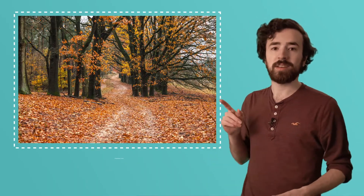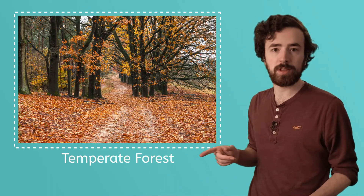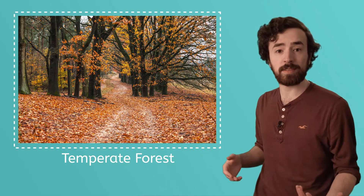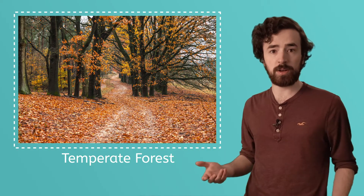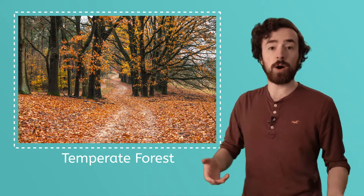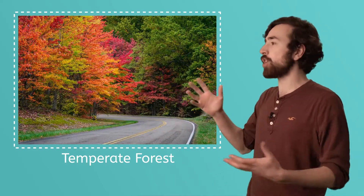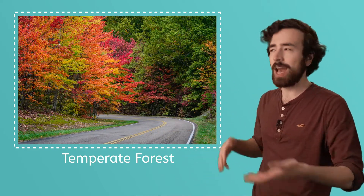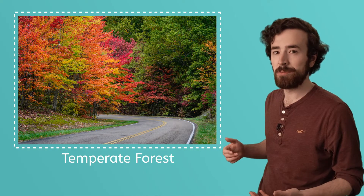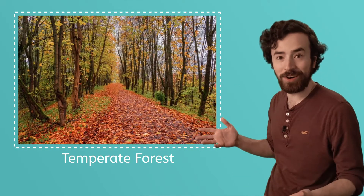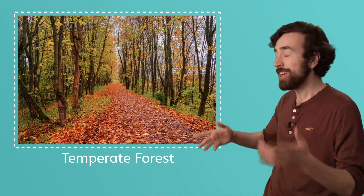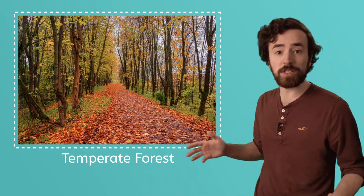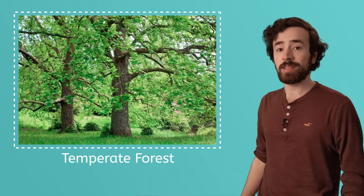This is a temperate forest. These forests can be found in places where it's hot in the summer and cold in the winter. And in autumn, the leaves on the trees change color. What happens next, after the leaves change color? They fall! Yes, these trees lose their leaves in the fall and winter, and they come back in the spring and summer.